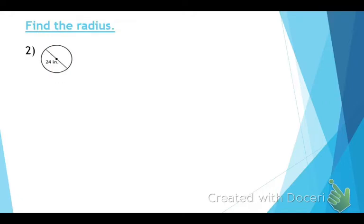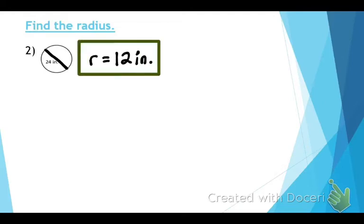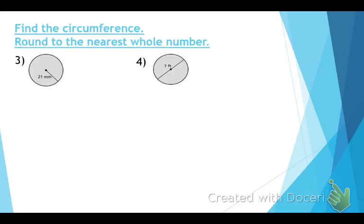Let's do just the opposite. The next one asks us to find the radius. It has given us the diameter because it's the distance all the way across the circle. What would the radius be? 12 inches. All you had to do was find what half of 24 was.